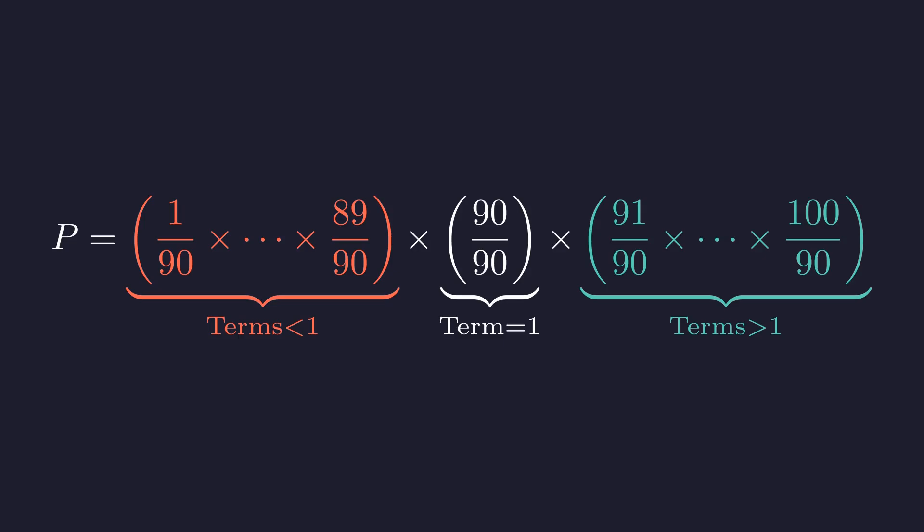Does the green group, the product of terms greater than 1, overpower the red group of terms less than 1? To find out, we can pair them up. This problem has a beautiful symmetry that we can exploit.